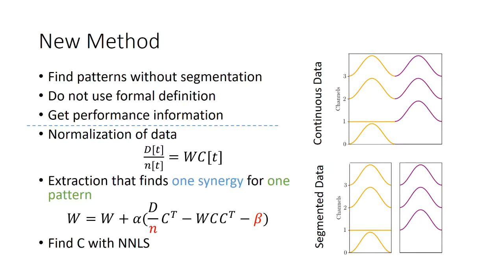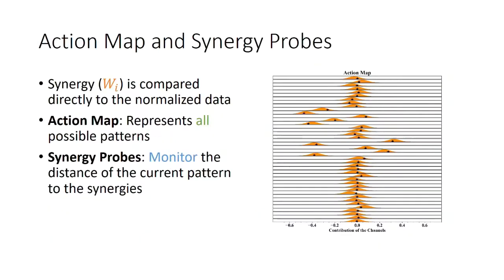To find C, we use non-negative least square. In this case, we can compare these synergies directly with the normalized data, so we don't need to calculate the matrix C in real time. We say that the representation of all possible patterns is called the action map.